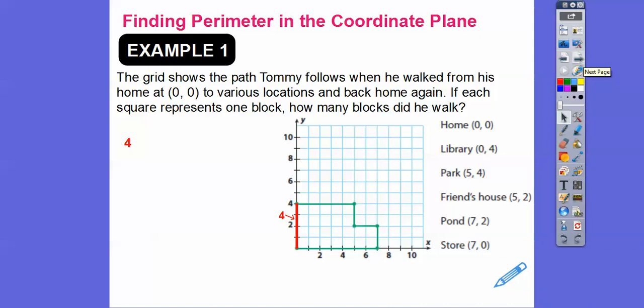And then he walks to the library. I'm sorry. He walked to the library. And then from the library, he's over five, up four. So over five, up four. That's this point right here. So we'll add those five blocks right there. So let's add those. And then he's going to go to the park. And then he's going to go to the friend's house. And then to the pond. And then back home. Boy, what a day for Timothy. That sounds fun.